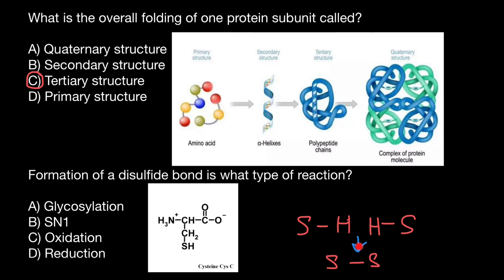The reverse reaction can break this covalent bond, and we call this a reduction reaction. Now we can choose the correct answer: formation of a disulfide bond is an oxidation reaction.